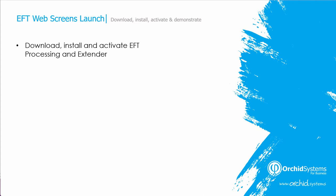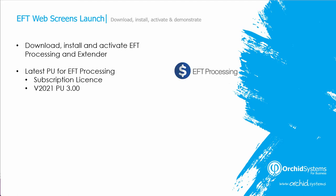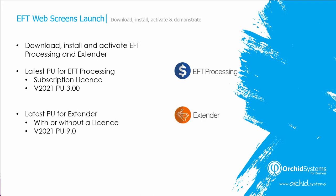We're now going to download, install and activate EFT processing and extender. I'm using version 2021, so the latest PU for EFT processing is version 3.0 and I will be applying a subscription license. The latest PU for extender is PU 9.0 and I'll be installing extender without a license. And then I'm going to demonstrate the EFT web screens.